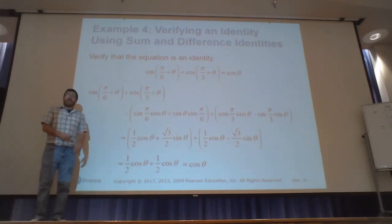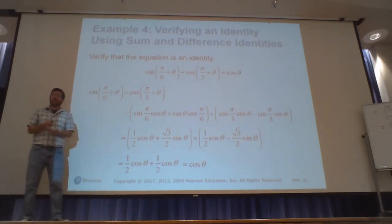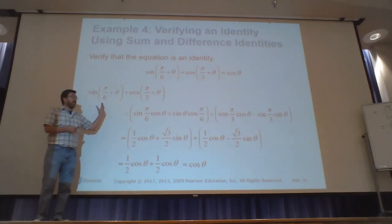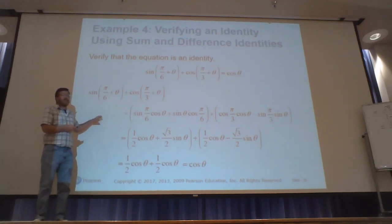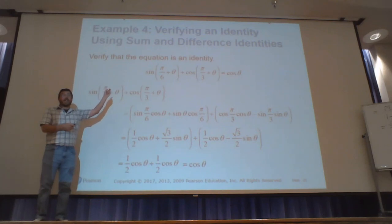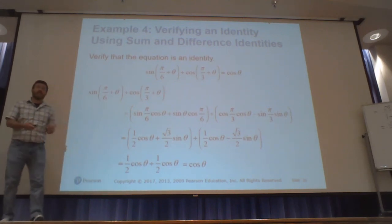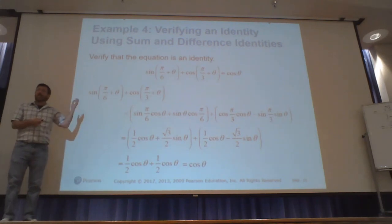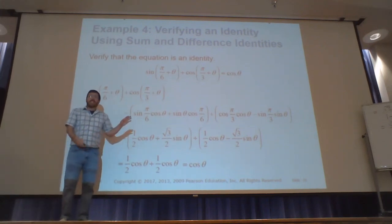That covers everything with the cosine, sine, and tangent sum and difference identities. Remember these work in both directions — for example, (tangent x + tangent y)/(1 − tangent x tangent y) can be rewritten as tangent of (x+y) if needed. Identities are equal on either side and can be used going either way. That's it for section 5.4.